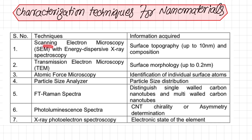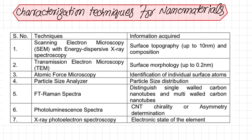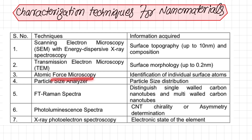The first technique is electron microscopes, which include two types. The first is scanning electron microscopy, or SEM, with energy dispersive X-ray spectroscopy. SEM is used for surface topography up to 10 nanometers and surface composition. The second is transmission electron microscopy, or TEM, which studies surface morphology with a resolution up to 0.2 nanometers and provides more detailed information.